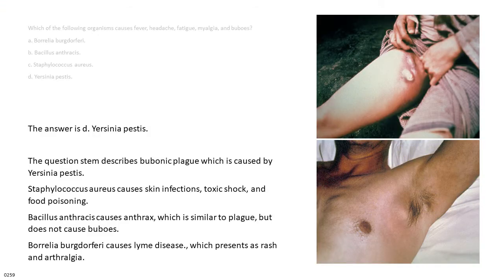The answer is D. Yersinia pestis. The question describes bubonic plague, which is caused by Yersinia pestis. Staphylococcus aureus causes skin infections, toxic shock, and food poisoning. Bacillus anthracis causes anthrax, which is similar to plague but does not cause buboes. Borrelia burgdorferi causes Lyme disease, which presents as rash and arthralgia.